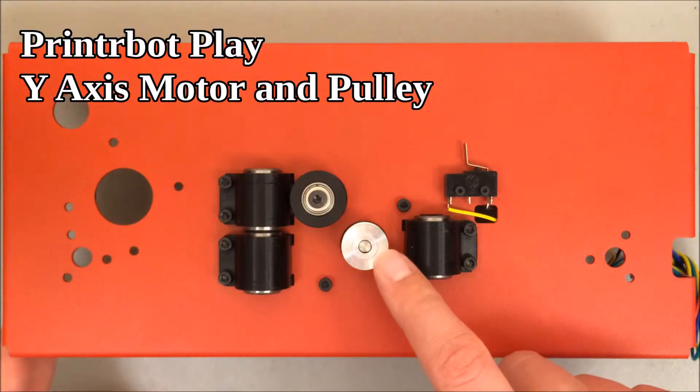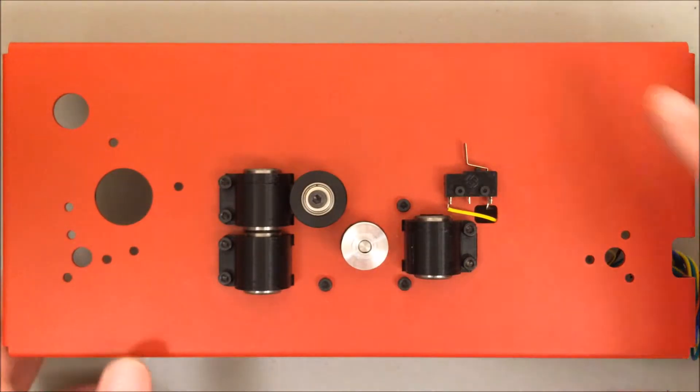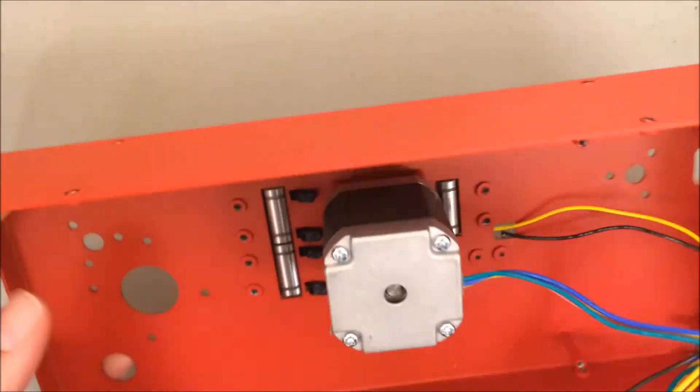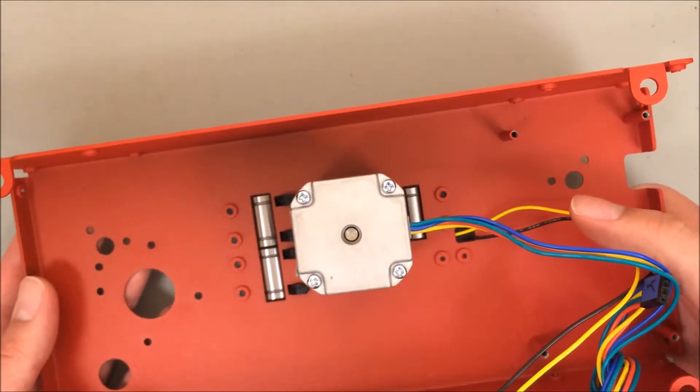Here is the first of four motors, this is the y-axis motor. It doesn't look like much from the top because this is just the pulley, but if I flip it over you can see the stepper motor attached underneath.